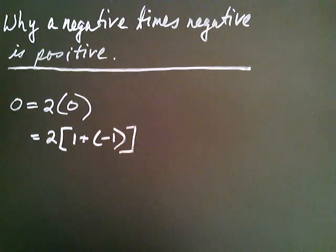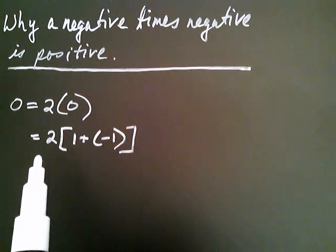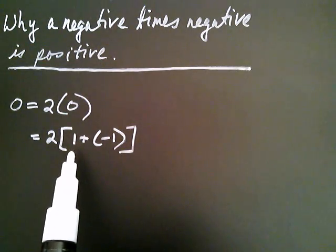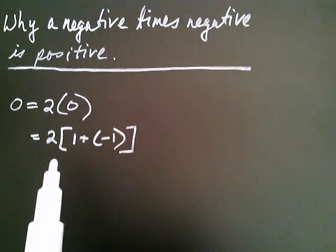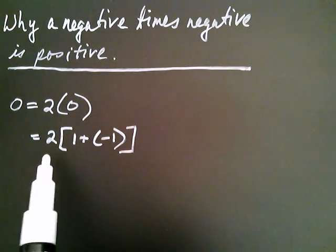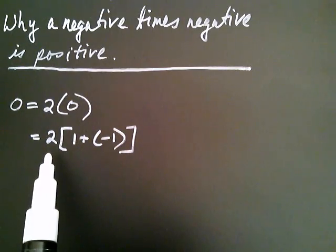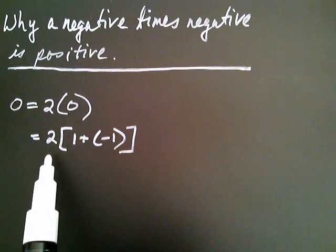Two is being multiplied by this sum — one plus negative one. And any time you have a number multiplied by a sum, we know that you can distribute that number on the outside.